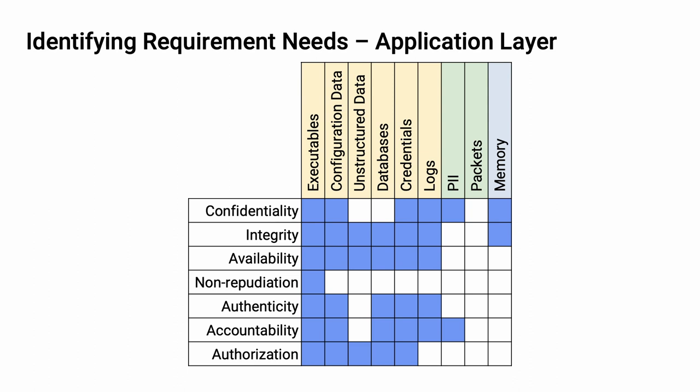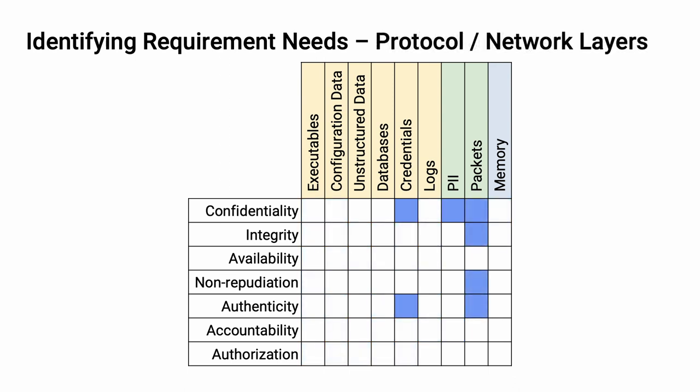The next layer in the sequence is protocols. But we found, after completing requirements identification, that the protocol and the network assertion locations were the same — which is why they're shown together here. It's important to note that they were not identical in terms of actual number and specific requirements, but that the property-asset mapping was the same.